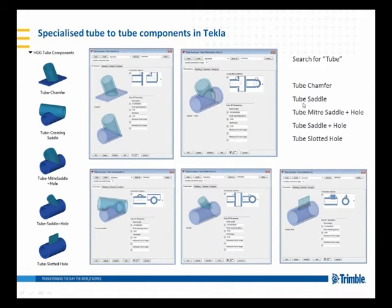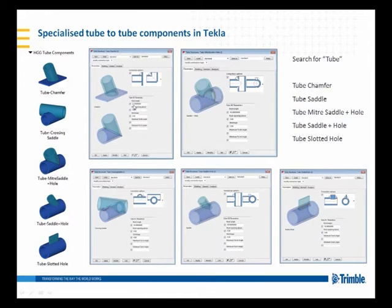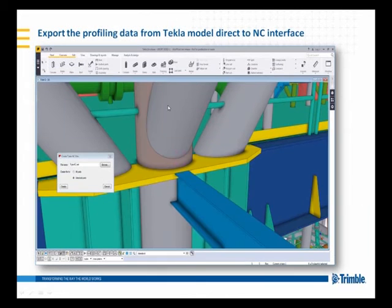These include: tube chamfer, tube saddle, tube mitre saddle and hole, tube saddle and hole, and tube slotted hole. These components have many different variations of their type of connection. You'll also see within here we have weld preparation options and shrinkage — these are unique to those particular connections.